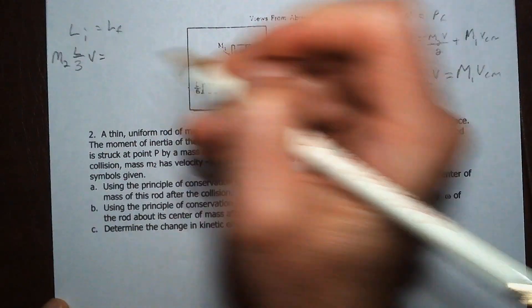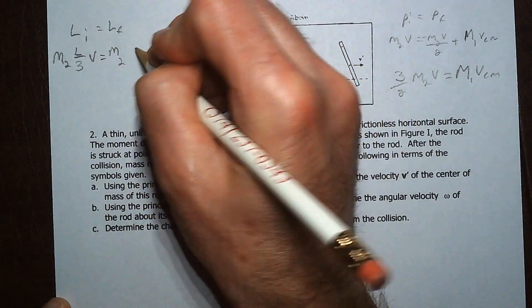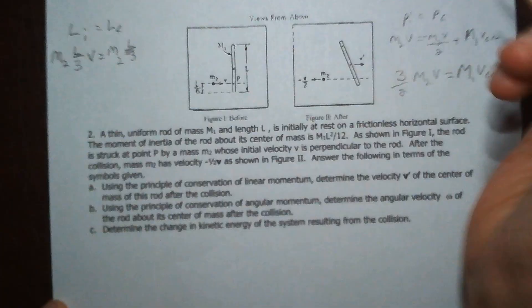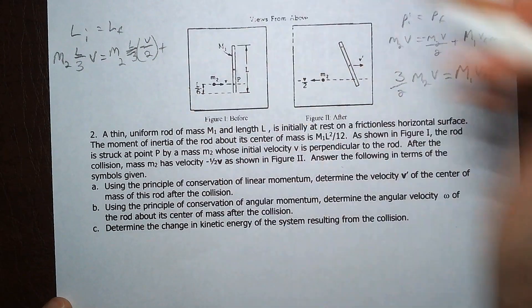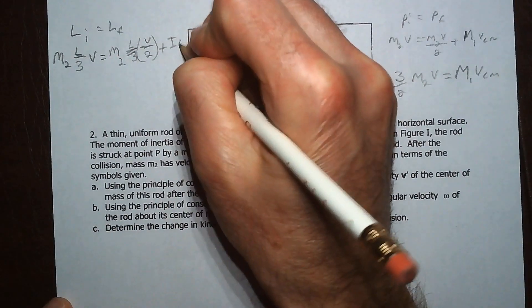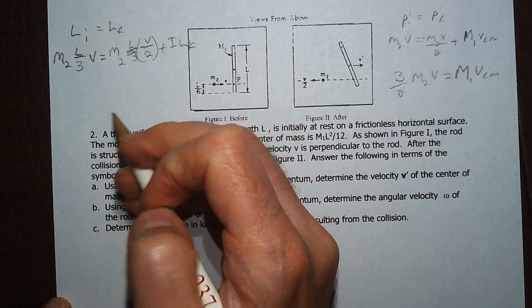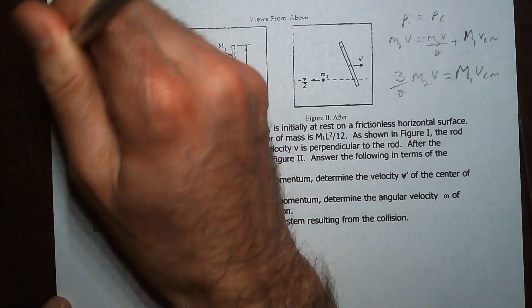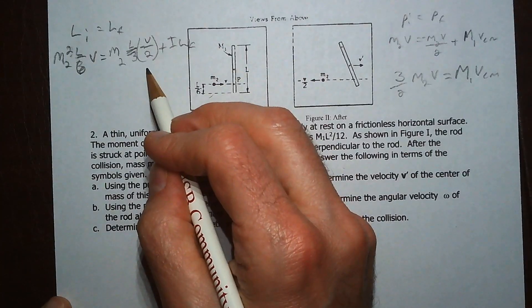And then afterwards, it's going to be M2L over 3, and then it's negative V over 2. So plus I of the rod times omega final. All right, so this is going to be, coming up here 6, so let's make this 6, 3, 3, no sorry, 2, 6. Is that right? Yes, 2, 6. Okay. All right.